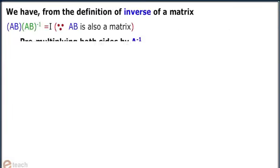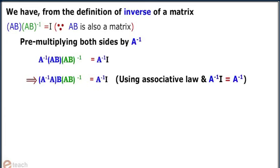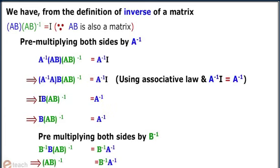We have, from the definition of inverse of a matrix, AB into AB whole inverse equals I. We know that AB is also a matrix. Premultiplying both sides by A inverse, we get A inverse into AB into AB whole inverse equals A inverse into I.